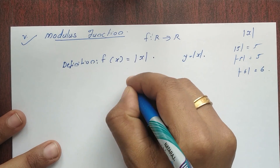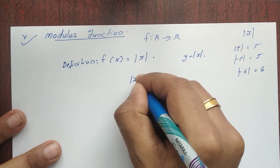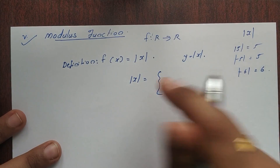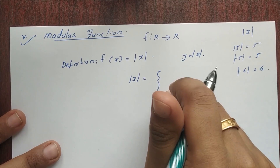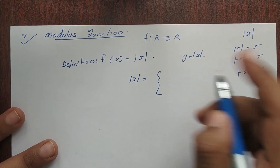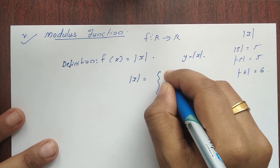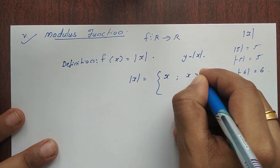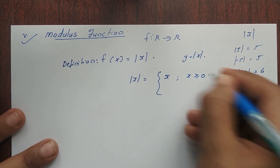Then mod x — we will classify it into two parts. How do we say? x when x is greater than or equal to 0.